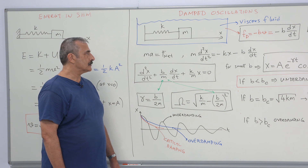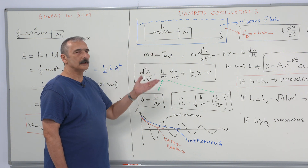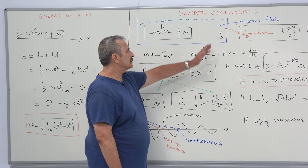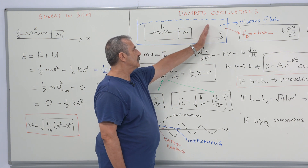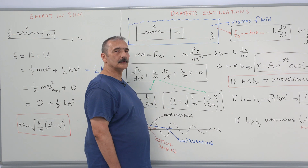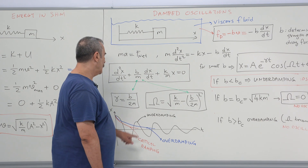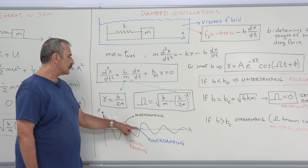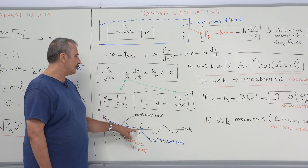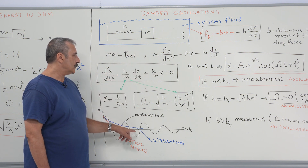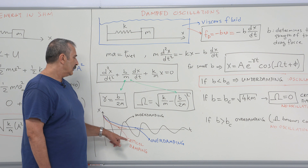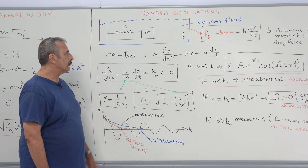Physically, this means the energy stored in the spring is not sufficient to take the mass back to its equilibrium position. The mass will only approach its equilibrium position x equals zero asymptotically as t approaches infinity. The same is true for critical damping.